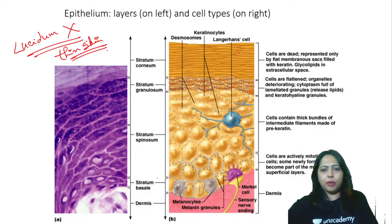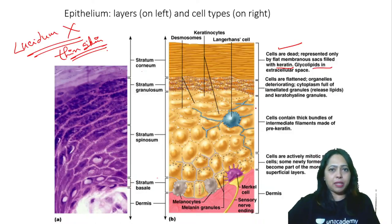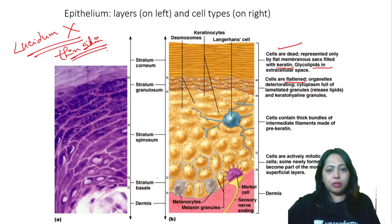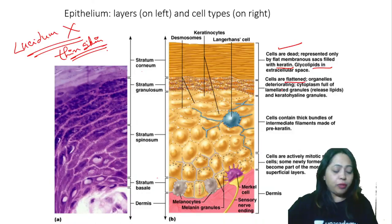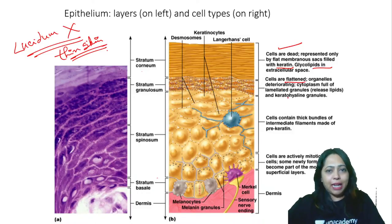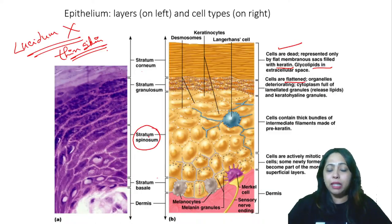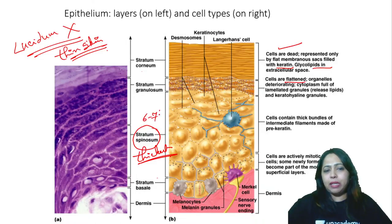Glycolipids are present in the extracellular space. In the granulosum, cells are very flat with cytoplasmic extensions, and the organelles within them are all deteriorating — they are all filled with material called keratohyaline granules. The spinosum has thick bundles and is the thickest layer. If somebody asks which one is the thickest layer, it is the spinosum — it has about six to seven layers of cells and very thick bundles of intermediate filaments.